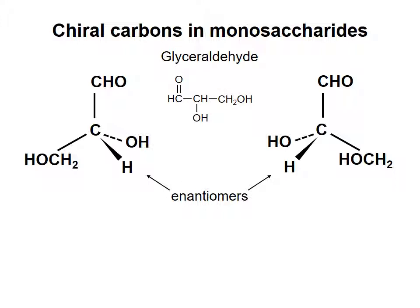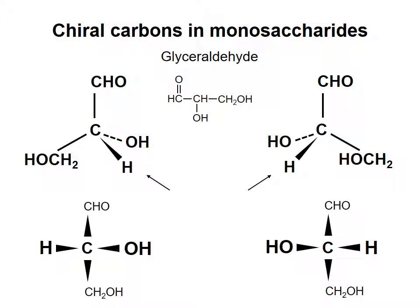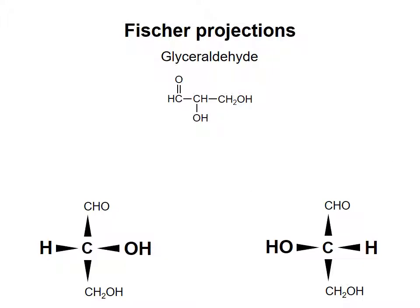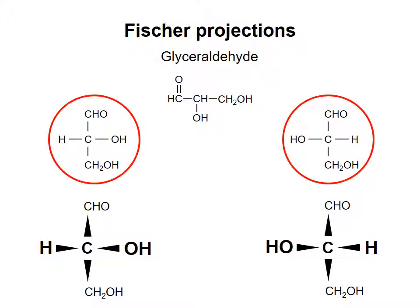We need a way of easily representing the different possible three-dimensional configurations of glyceraldehyde and other monosaccharides. To help show how we do this, we can rotate the structures of glyceraldehyde. Imagine looking at the molecules from the perspective of the arrows — from that angle, the H and OH groups would be coming towards you from the central carbon atom and the other groups would be pointing away. The diagrams at the bottom of the screen are intended to show that: the two horizontal bonds are coming out of the screen at you, while the two vertical bonds are directed away from you, pointing into the screen. Instead of drawing the bonds to the central chiral carbon as triangles to show the three-dimensional arrangement, it is simpler just to draw ordinary straight lines. This type of diagram is called a Fischer projection, after the pioneering carbohydrate chemist Emil Fischer. When a monosaccharide is represented in this way, it is understood that the horizontal bonds are meant to be coming out of the page toward the viewer, while the vertical bonds are going into the page away from the viewer.